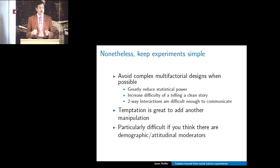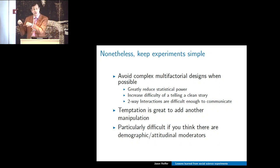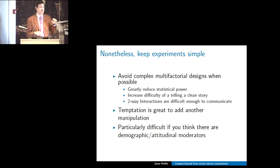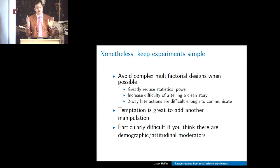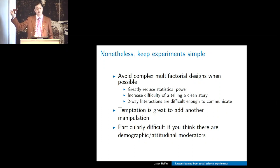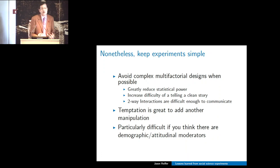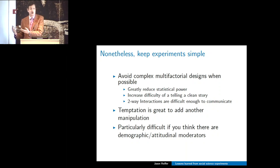Two-way interactions are difficult enough to communicate to lay audiences. An interaction is how one variable alters the effect of a second variable—how the presence or absence of one manipulation affects the causal effect of a second manipulation. When you start getting into three- and four-way interactions, it becomes extremely complex. A three-way interaction would be: how does the presence or absence of some third manipulation affect the extent to which a second manipulation alters the effect of a first? Four-way interactions make my head explode.